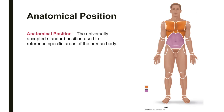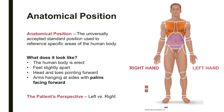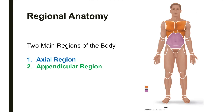In anatomical position, the body is erect, with feet slightly apart, and the head and toes pointing forward. The arms are hanging at the sides with palms facing forward. Note that when describing the right and left sides of the body, we are doing so from the patient's perspective — right hand, left hand. The body is divided into two main regions: the axial and appendicular regions.